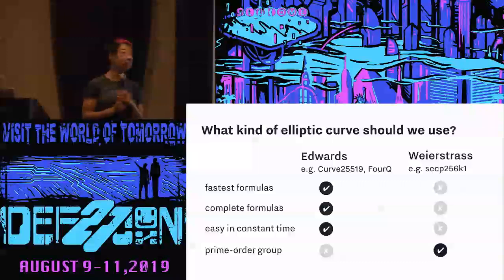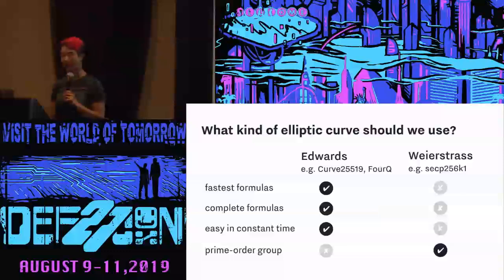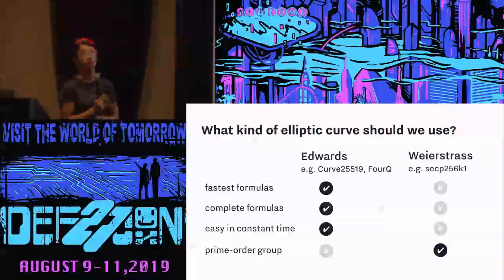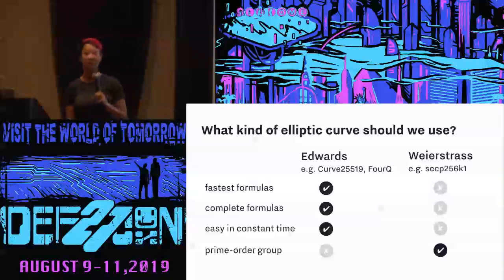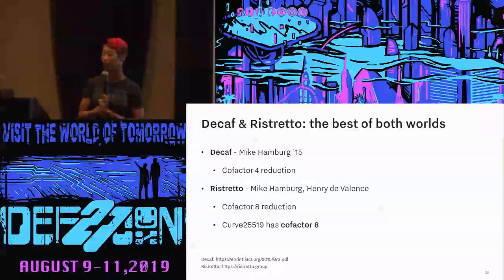Edwards curves are really nice because they're really fast, have complete formulas — meaning no weird edge cases to deal with one by one — and they're easy to implement in constant time. The problem is that Edwards curves aren't prime order. Weierstrass curves, such as secp256k1 which Bitcoin uses, are prime order, but don't have the nice performance and complete formula properties. It would be awesome if we could get the best of both worlds. In the past, people just used an Edwards curve in the place of a prime order group, and it was not fine — that leads to cofactor problems. However, we have two protocols called Decaf and Ristretto that actually do let us get the best of both worlds.